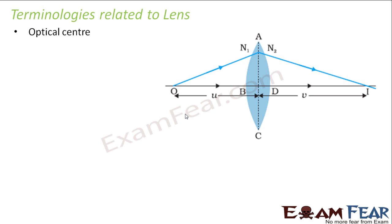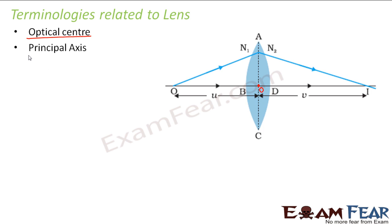The first new term here is optical center. Just like we talked about the pole of a mirror, in the case of a lens we call the center point the optical center, generally denoted by capital O. Next is the principal axis — the line that passes through the optical center and also joins the centers of curvature of both spherical surfaces. This line is the principal axis.